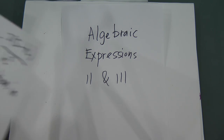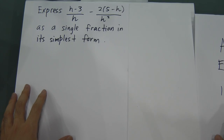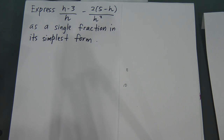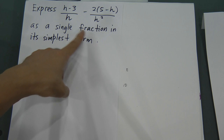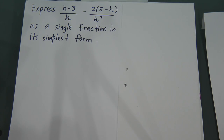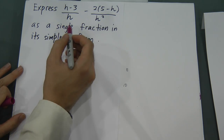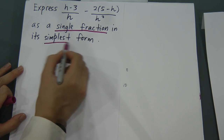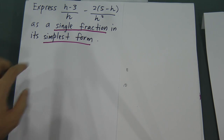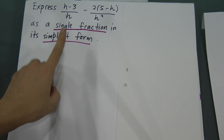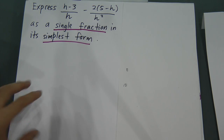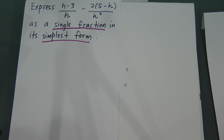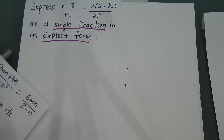The first example: express (h minus 3) divided by (h minus 2), subtract (5 minus h) divided by h-squared, as a single fraction in its simplest form. The keyword here is 'single fraction in its simplest form' — you need to combine these two fractions into one big fraction and then simplify until it cannot be simplified anymore.